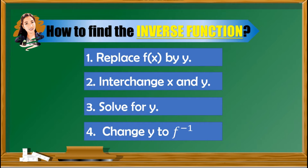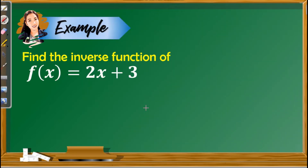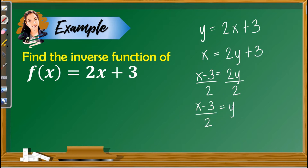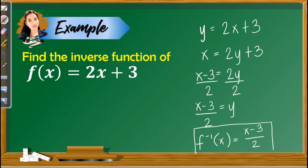Let us now apply the following steps to our examples. For the first example, find the inverse of f(x) = 2x + 3. The first thing we do is change f of x to y, so we have y = 2x + 3. Second step, interchange x and y, so we have x = 2y + 3. Isolate 2y: add negative 3 to both sides, so we have 2y = x − 3. Then divide both sides by 2, giving y = (x − 3)/2. To indicate that this is an inverse, we change y to f inverse of x. So f⁻¹(x) = (x − 3)/2. This is the inverse of our given function. Since the function is one-to-one, then the inverse is also one-to-one.